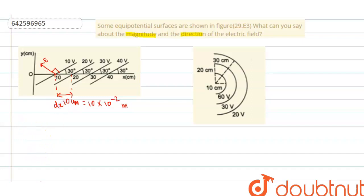So the angle between E and dx is 90 degree plus 30 degree, right? And the change in the first and the second equipotential surface is dv, and dv is 10 volts.